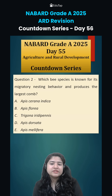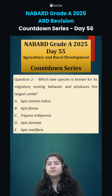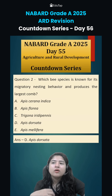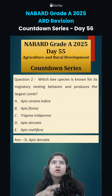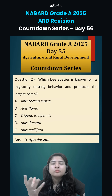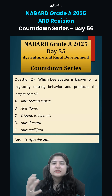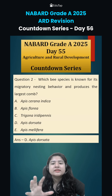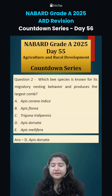Second question: which honeybee species is known for its migratory nesting behavior and produces the largest comb? It is Apis dorsata, also known as the rock bee. They form the largest comb, which can be 1 to 1.5 meters long, and they keep migrating season to season in search of nectar sources. In India, these are the largest honey-producing species, but they cannot be domesticated because of their migratory behavior.